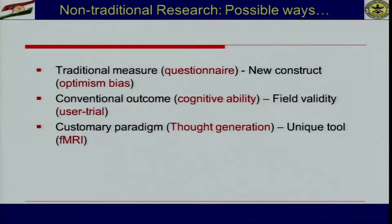Otherwise most of our studies will remain in stacks and people would not make use of them professionally until they understand the utility of such tests — under what conditions and with how many errors a test can actually predict a behavioral outcome. We can use a customary paradigm with a unique tool. A customary paradigm is thought generation, to understand what regions of the brain get activated under what kind of thought process. Today we have a unique tool called functional magnetic resonance imaging, in which we understand the brain activation pattern in collaboration with some kind of thought.